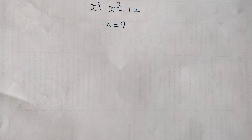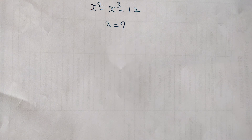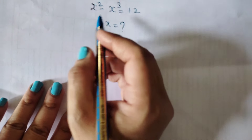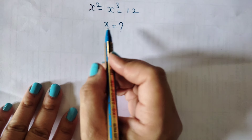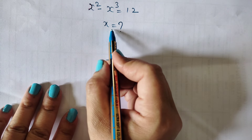Hello everyone, welcome to my YouTube channel. Today we are going to solve another Olympiad question. This question is based on algebra: x squared minus x cubed equals 12. This is the equation and here we need to find the value of x.